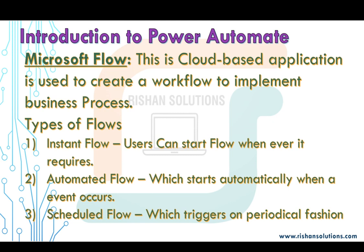These kinds of flows are called automated flows. The last type is scheduled flows, which trigger in a periodic fashion. We also have two other types of flows we'll discuss later: UI flows and business process flows. In this session I'm going to start with an automated flow.